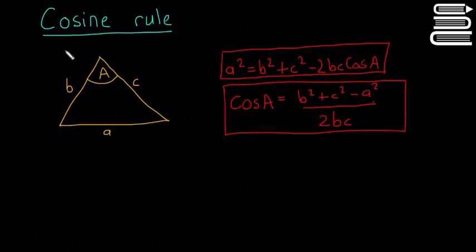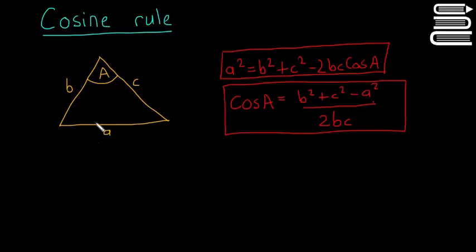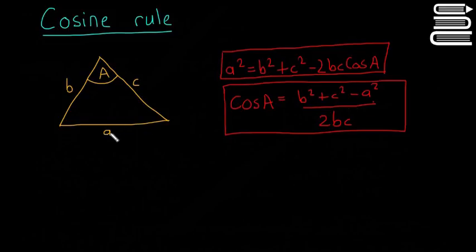The cosine rule is what we're going to look at in this video. It can be really useful: if you have sides b and c and the angle A in between them, you can use the cosine rule to find the last side a. That's really useful especially for triangles that aren't right-angled, because if it was a right-angled triangle you'd just use Pythagoras — otherwise it's really hard to find side a.